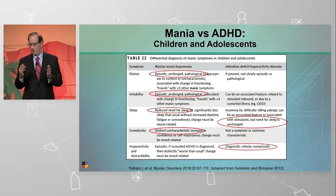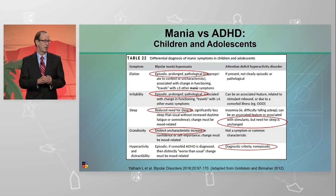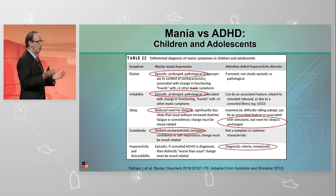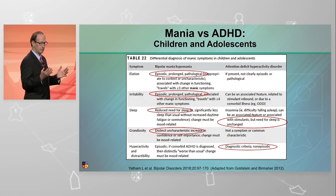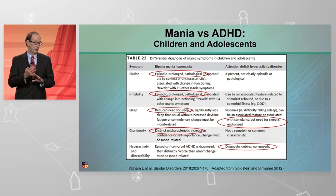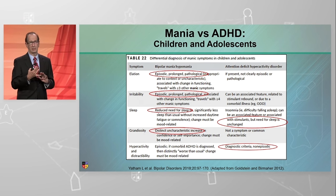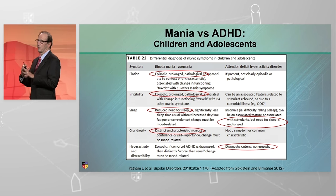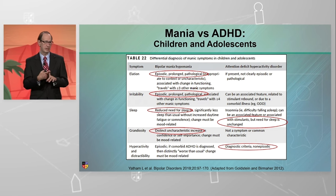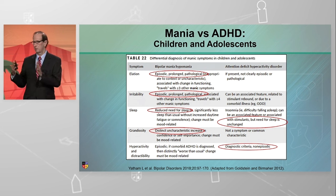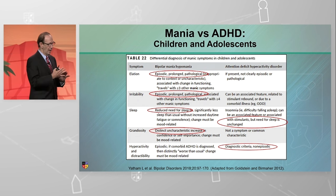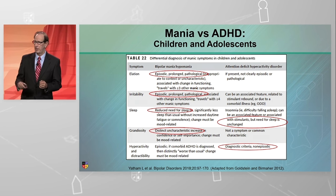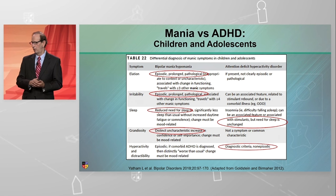If you look at the definitions of mania versus ADHD in the DSM-5 for children and adolescents, bipolar disorder is cyclical — it occurs episodically. There's also a reduced need for sleep in mania and hypomania; you don't see that in ADHD. You see distinct grandiosity in mania and hypomania; you don't really see that in ADHD, unless you have a narcissistic personality disorder and ADHD. The hyperactivity is usually chronic and unchanging for ADHD and cyclical with bipolar disorder.